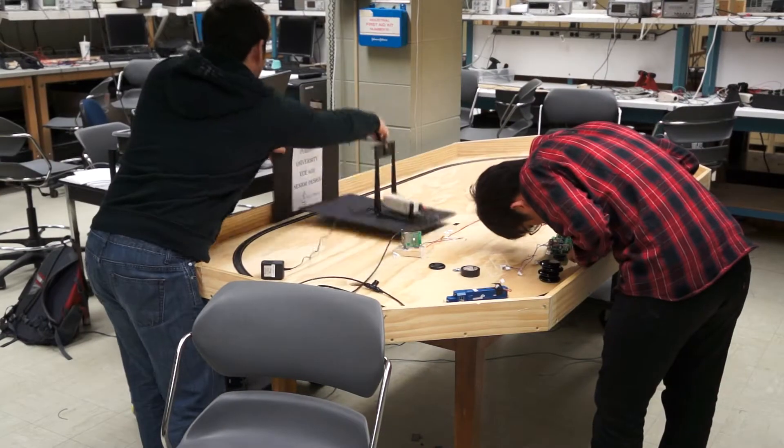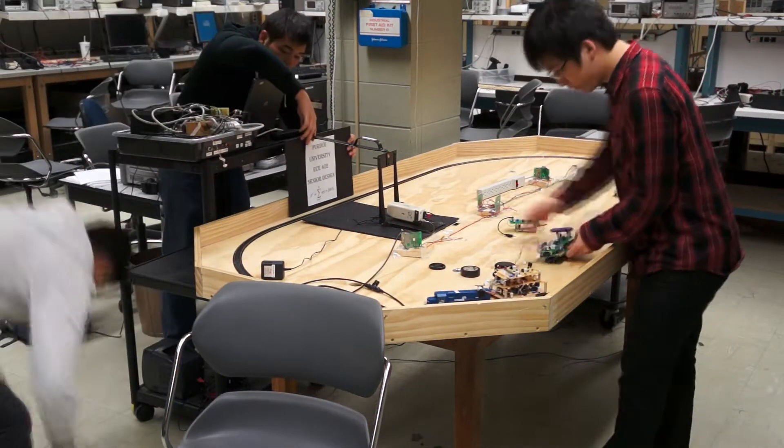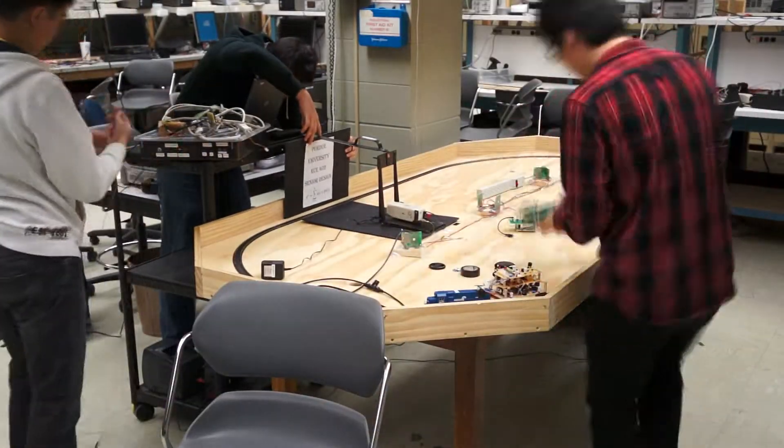The design consists of four major subsystems: Cruise Control, Station Hall Control, Train Brain, and Train Power.